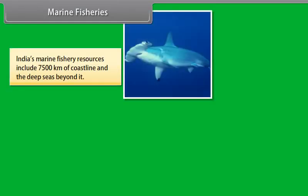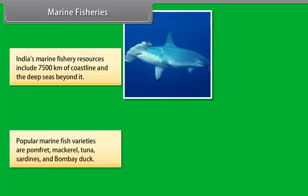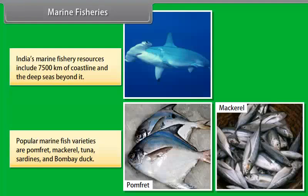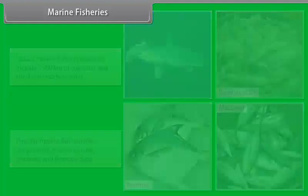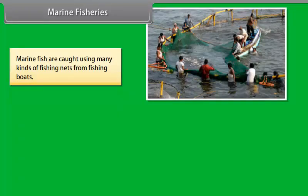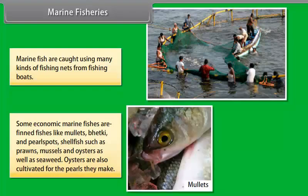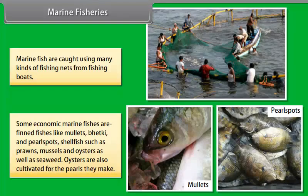India's marine fishery resources include 7,500 km of coastline and the deep seas beyond it. Popular marine fish varieties are pomfret, mackerel, tuna, sardines and Bombay duck. Marine fish are caught using many kinds of fishing nets from fishing boats. Some economic marine fishes are finned fishes like mullets, Betki and pearl spots, shellfish such as prawns, mussels and oysters, as well as seaweed. Oysters are also cultivated for the pearls they make.